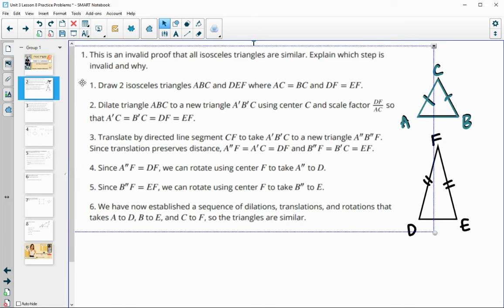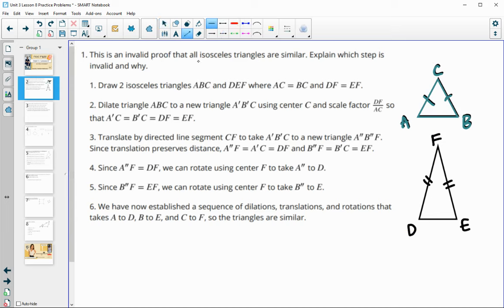In number one, it's telling us that we've got an invalid proof, so a proof that's wrong, that's trying to prove that all isosceles triangles are similar, which is not a true statement, but this proof inaccurately determines that it's true. So we want to try and figure out where this proof went wrong. So the first step was to draw two isosceles triangles, ABC and DEF, that have AC and CB equal to each other and DF and EF equal to each other. So I've done that off to the side.